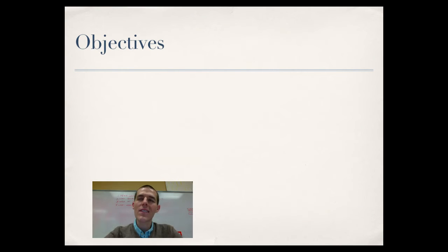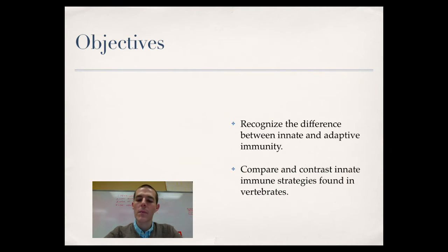As always, here's your objectives. These are the things that I need you to know or be able to do by the end of this video. First one, recognize the difference between innate and adaptive immunity and second, compare and contrast innate immune strategies found in vertebrates. So let's go ahead and jump on in.